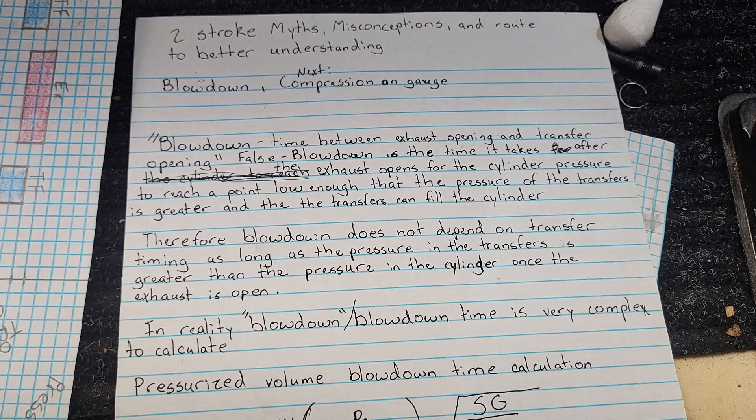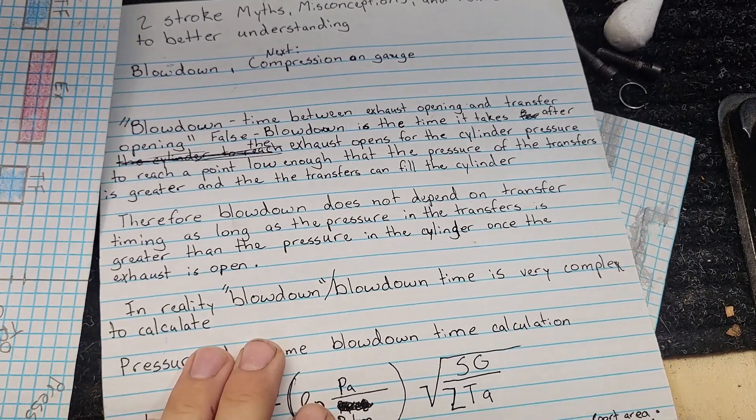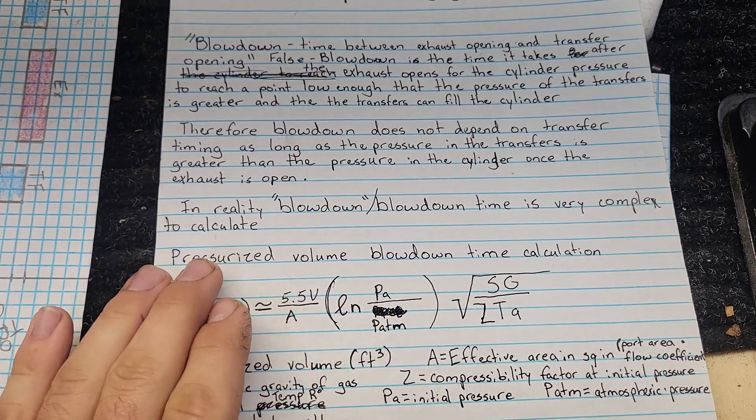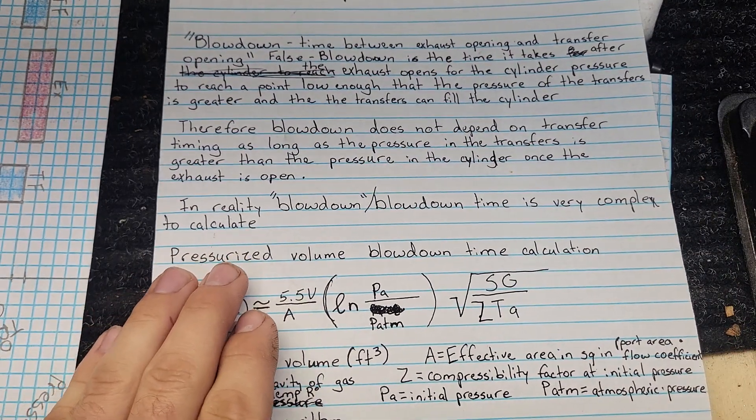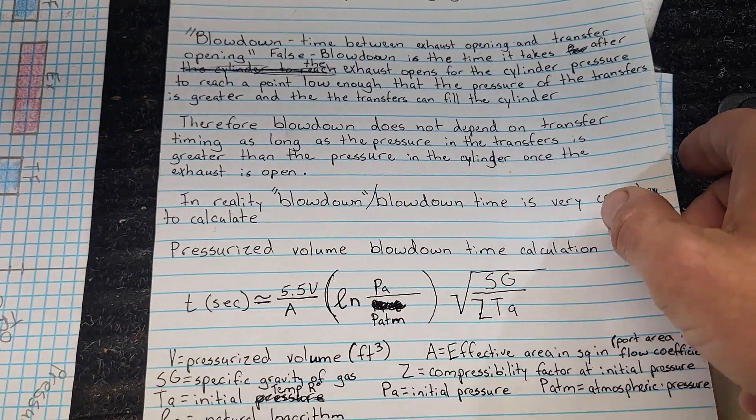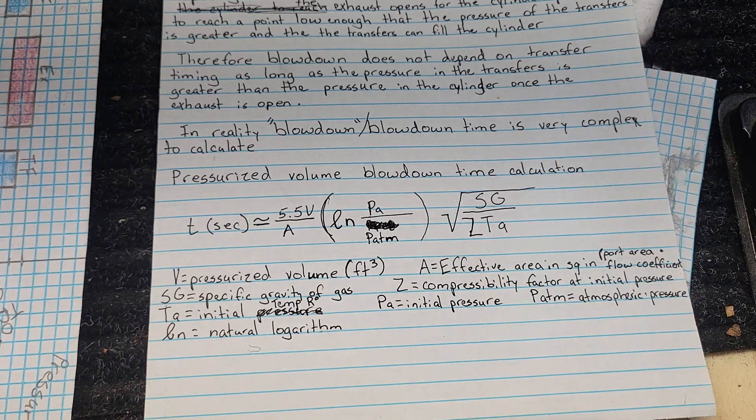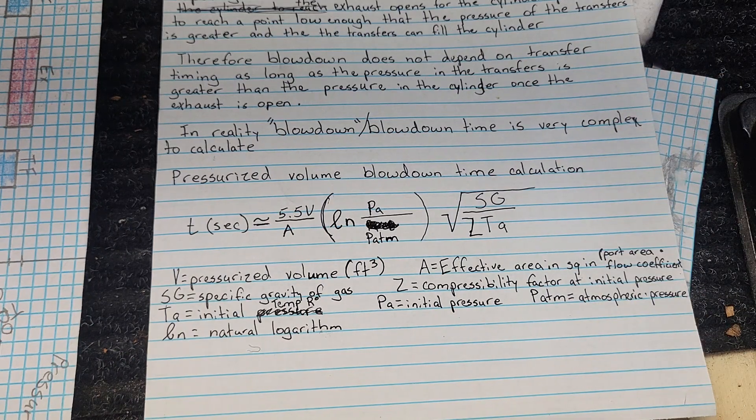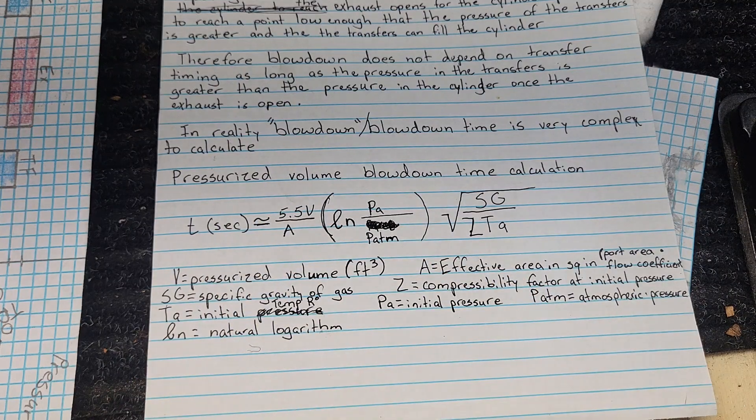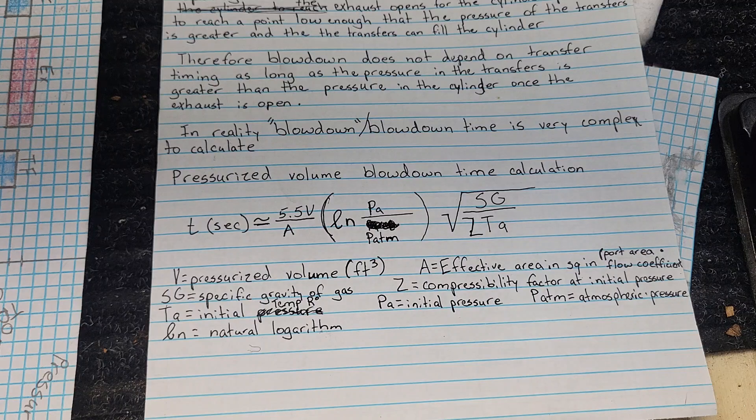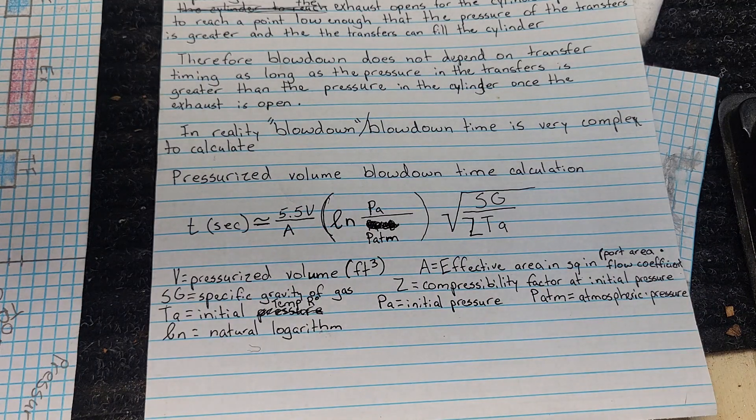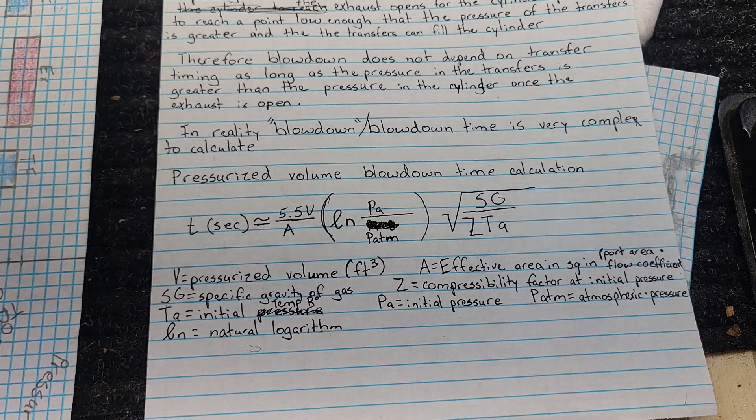In reality, trying to calculate your blowdown time in degrees is very, very complex. This is the equation to actually calculate the time in seconds, but that's going to be an estimate of the time in seconds it takes for that cylinder to reach atmospheric pressure.